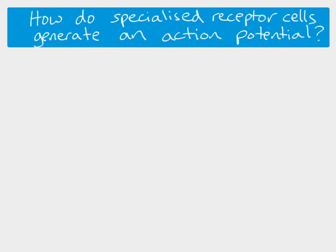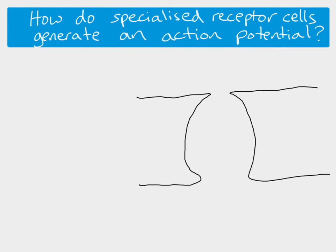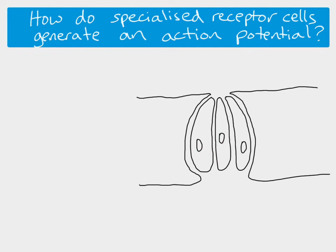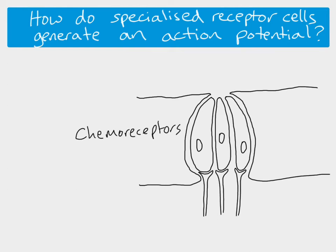Now we want to look at how the action potential is actually generated, using the example of the tongue and taste buds. In a taste bud there are lots of receptor cells connected via synapses to sensory neurons. These are chemoreceptors, which detect the presence of different chemicals. The specific example is sodium receptors - sodium chloride, regular table salt, dissociates into sodium and chloride ions, and these receptor cells detect the sodium ions present in the food we eat.